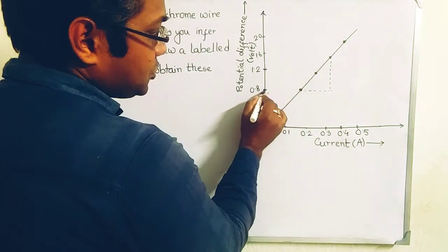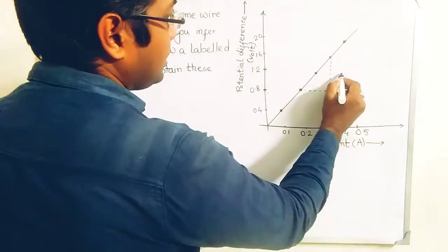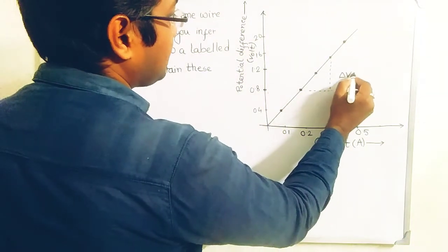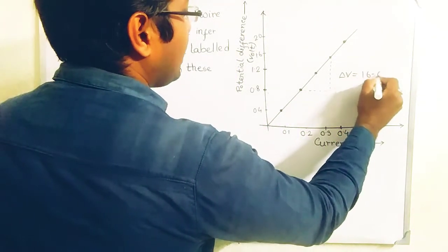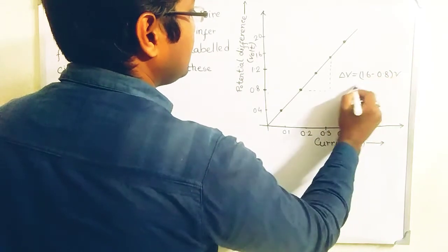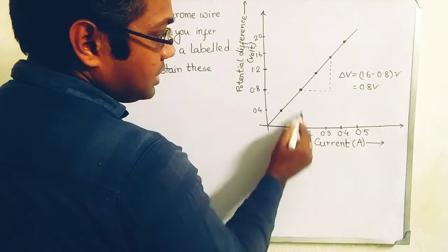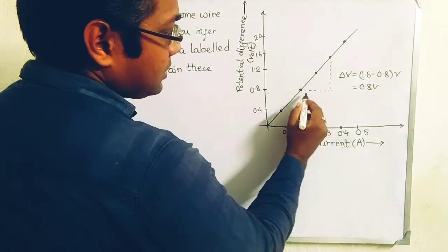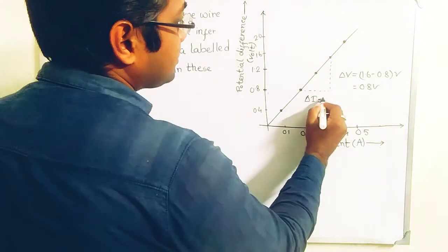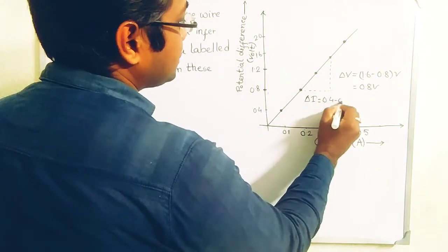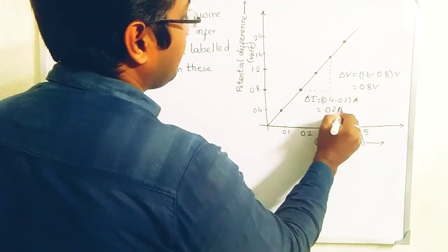It is starting from 0.8 and ends up to 1.6. So 1.6 minus 0.8 gives you the potential difference, that is 0.8 volt. And here it is starting from 0.2 to 0.4. That is ΔI, which gives you 0.4 minus 0.2, and this difference is 0.2 ampere.